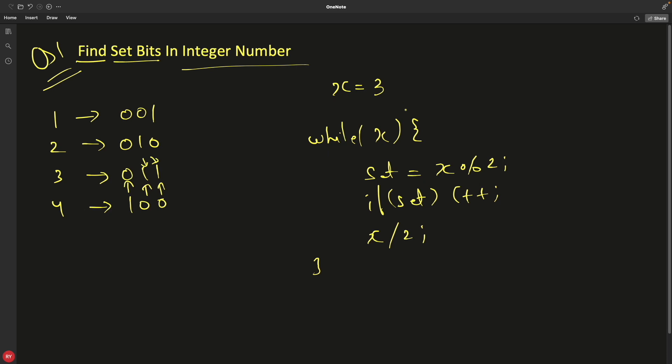So if x is 3, we have 3 modulo division 2. Answer would be 1. So set is 1. So if set is 1, then count plus plus. Count becomes 1. Initially, it will be 0. And then you will divide this x with 2. So x will be 1 now because 1.5 is not the number for integer and this is for integer numbers. So we have 1.